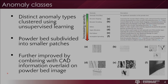Very severe anomalies can have detrimental part quality or complete build failures. To detect the anomalies, the powder bed is subdivided into smaller patches, and anomaly detection can be further improved by combining with CAD information overlaid onto the powder bed image to determine what part or feature had such an anomaly. The main anomalies are recoater hopping, recoater streaking, debris, superelevation, part failure, and incomplete spreading, as shown in the images in the bottom right.